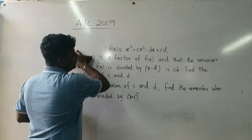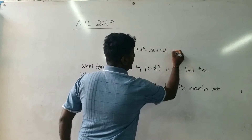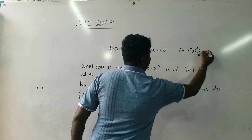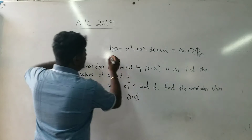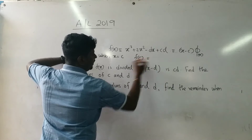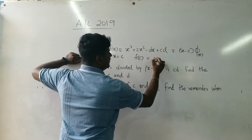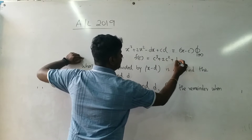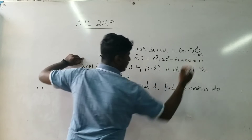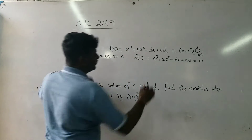First, since x minus c is a factor of f(x), we write f(x) equals (x minus c) times phi(x) with no remainder. Then when x equals c, f(c) equals zero. That gives us: c³ + 2c² + dc minus dc + c equals zero.